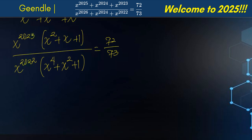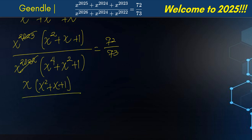Since 2023 minus 2022 gives us x, the x to the 2023 over x to the 2022 simplifies to just x. So we have x multiplied by x squared plus x plus 1, all divided by x to the 4 plus x squared plus 1, equals 72 divided by 73.